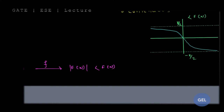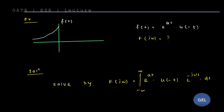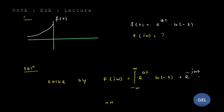Now the second kind of question: e to the power at times u(−t). This is a real exponential multiplied with u(−t). We need to find the Fourier transform F(jω). The first way is to multiply by e^(−jωt) and integrate. But before further analysis, I want you to remember all the properties explained in the last lecture — those properties are extremely important for all kinds of questions and exams.